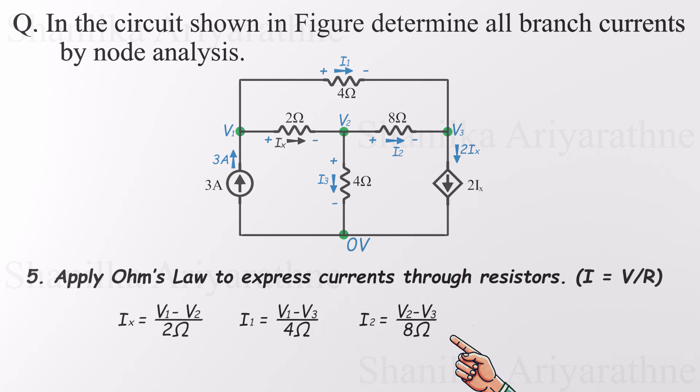For the 8 ohm resistor between V2 and V3, the current I2 is V2 minus V3, divided by 8. And for the other 4 ohm resistor, which is connected from V2 to ground, the current I3 is simply V2, divided by 4. Now we've got IX, I1, I2, and I3 all written in terms of the node voltages V1, V2, and V3.